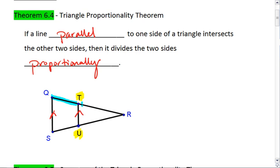Meaning that each side of the triangle is cut into proportional segments. Thus, QT to TR is going to be in the same ratio as SU to UR.